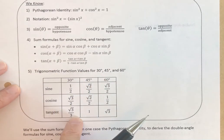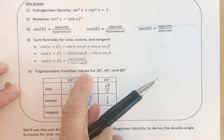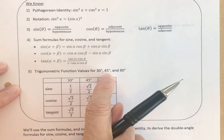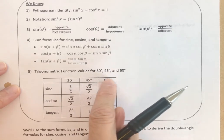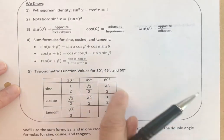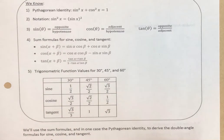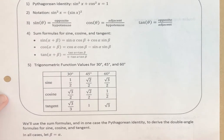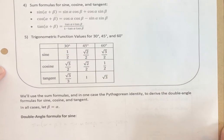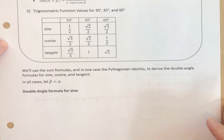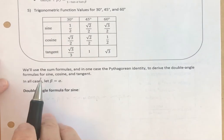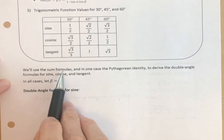We also have the exact trigonometric values for 30 degrees, 45 degrees, and 60 degrees from unit circle work. So let's get started. We're going to derive each of these three formulas using the sum formulas.